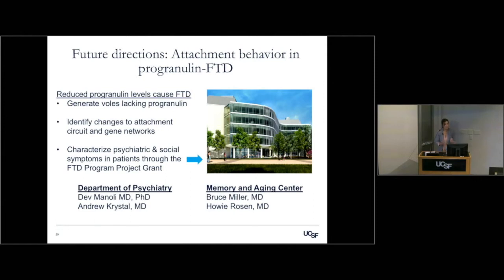Ultimately, I want to move easily back and forth between the lab and patients. Our lab is on the fourth floor and the Memory and Aging Center is down on the first floor. Bruce Miller and Howie Rosen are working at the Memory and Aging Center with a program project grant specifically recruiting FTD patients and getting a detailed view of their genetics and diagnostic markers. I'll be working with Dr. Crystal from our department to more comprehensively characterize the psychiatric and social symptoms in these FTD patients, to translate between our vole system and clinical findings.